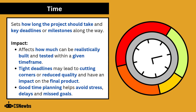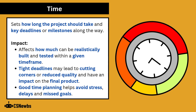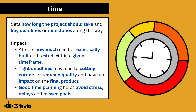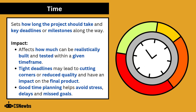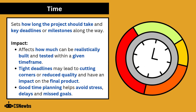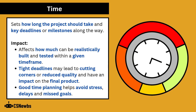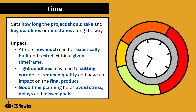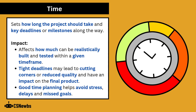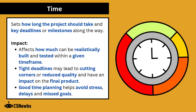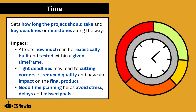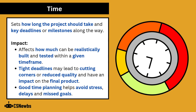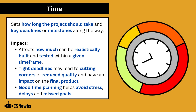The final planning consideration is time, which sets how long the project should take and key deadlines or milestones along the way. Time affects how much can be realistically built and tested within a given time frame. Tight deadlines may lead to cutting corners or reducing quality, and have an impact on the final product. Good time planning helps avoid stress, delays, and missed goals.